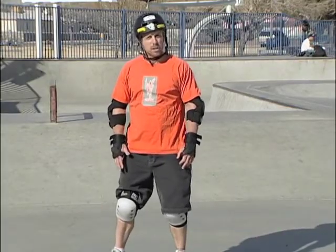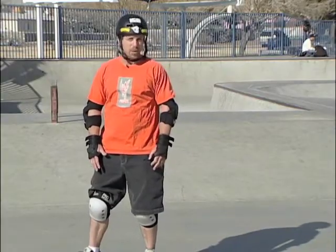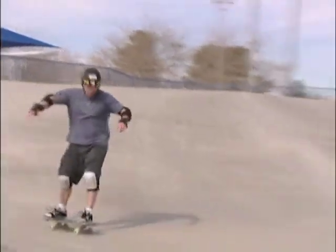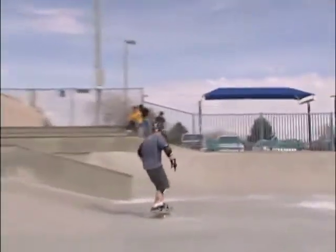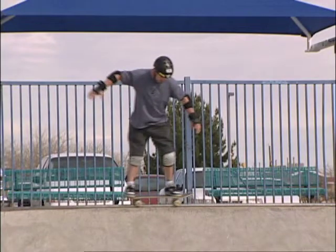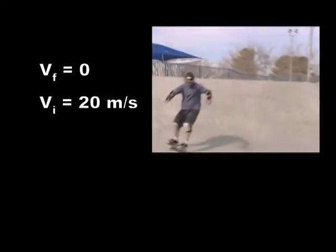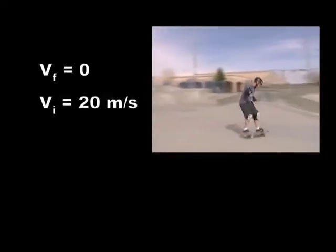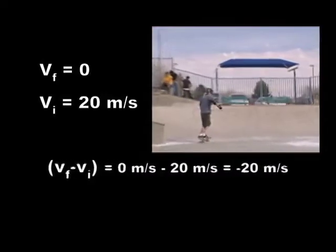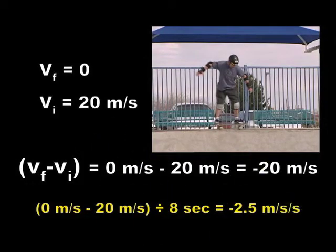That problem is all about acceleration. But what about deceleration? An acceleration problem that produces a negative answer describes deceleration. A skateboarder who comes off a ramp with a velocity of 20 meters per second and comes to a stop in 8 seconds would have what value of deceleration? How do you know if it is deceleration and not acceleration? Since the final velocity is 0 and the initial velocity is 20 meters per second, using V final minus V initial, you get 0 meters per second minus 20 meters per second, which equals negative 20 meters per second. Dividing this by 8 seconds gives you an answer of negative 2.5 meters per second per second. You know it is a deceleration since the answer is negative.